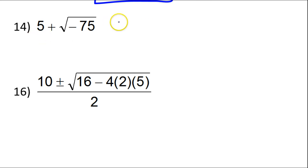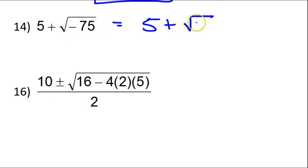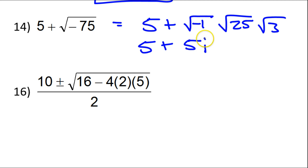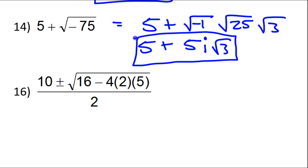On number 14, we've got the 5 plus. You know we're going to have i. Look at the 75 — I've got the square root of negative 1, that's my i. Now, 75 is 25 times 3. This is going to be 5 plus: the square root of 25 is 5, the negative 1 gives us i, then I've got my radical 3. These are not like terms — this is the final answer. You cannot add these together and get 10i radical 3. You have to stop right here.